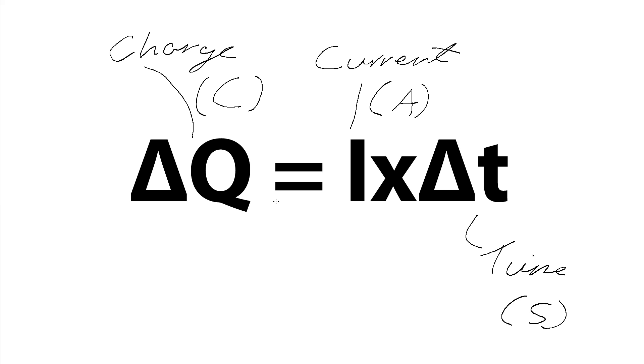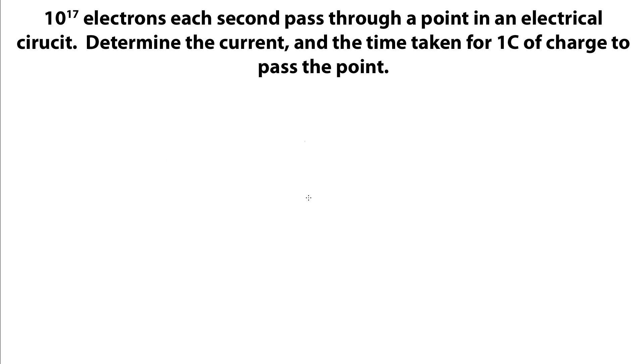And now we can illustrate this with an example. So this question reads 10 to the 17 electrons each second pass through a point in an electrical circuit. Determine the current and the time taken for one Coulomb of charge to pass this point in the circuit that we are looking at. So you might want to pause this now and have a go at it yourself before I go over it.